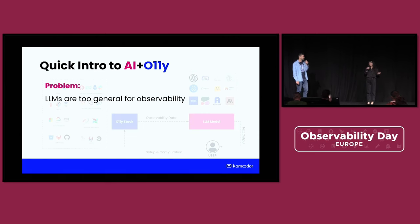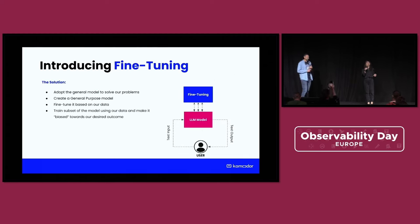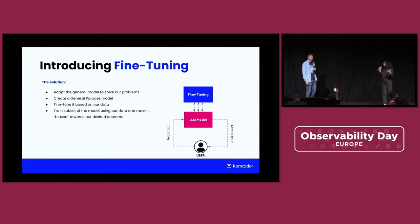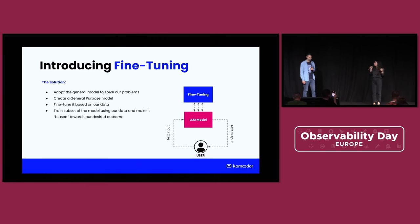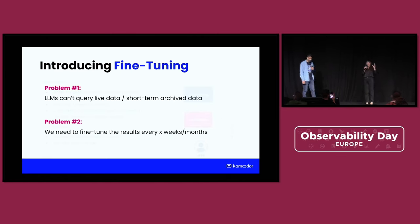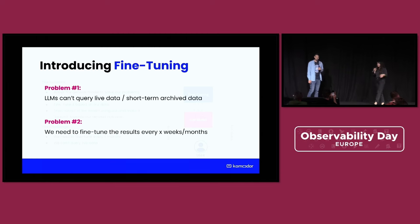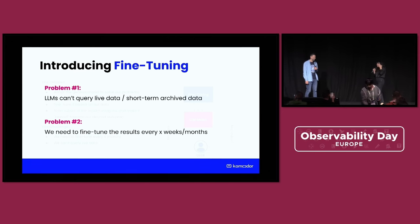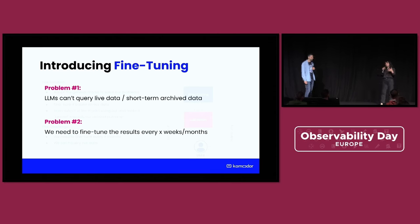So we basically do have a possible solution: we can do fine-tuning. What we do is take a general model — for example, an LLM — and then take a subset of this model and train it with our data, the data of our organization. The answers we receive will then be more custom-made for our needs. But we still have a few problems — the main issue is that an LLM cannot query live data by itself. So we need to fine-tune the results every week or month with new data, because it's not synchronizing in real time.